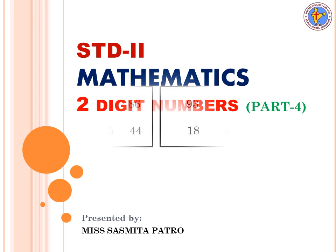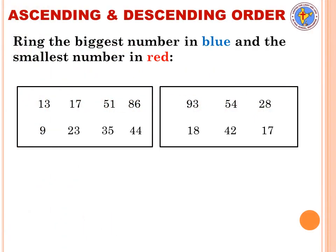In this video we will learn about ascending and descending order. You can see there are two boxes with some numbers given — two digit numbers and one digit numbers. You have to ring the biggest number in blue color and the smallest number in red color. To find the biggest number, if it is a two digit number, look at the tens place — whichever has the biggest tens digit is the biggest number.